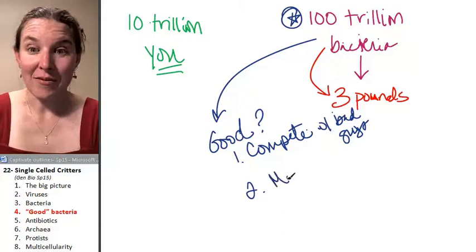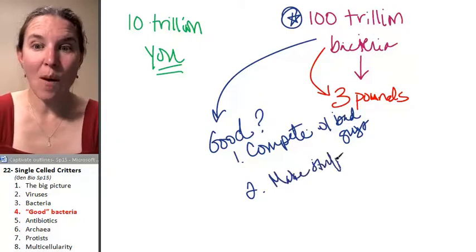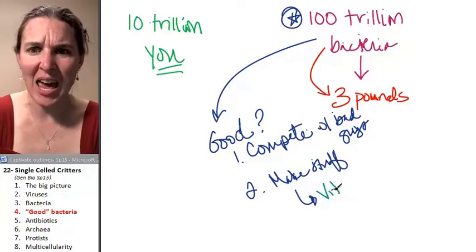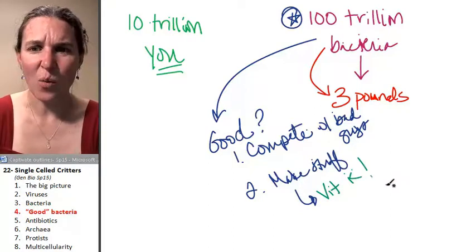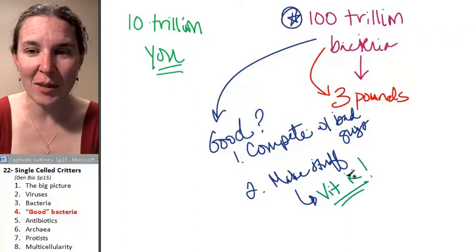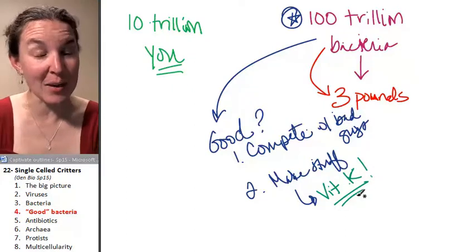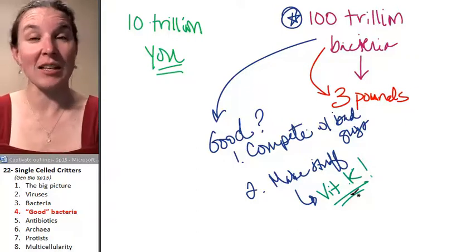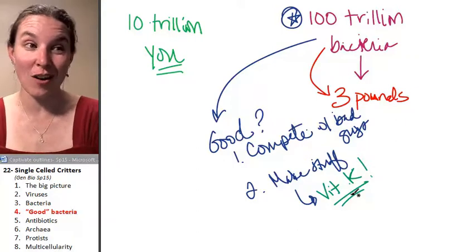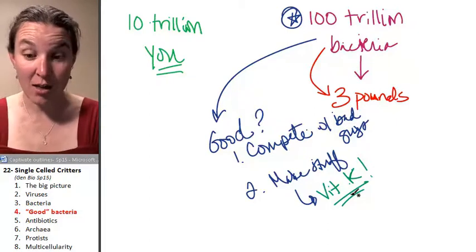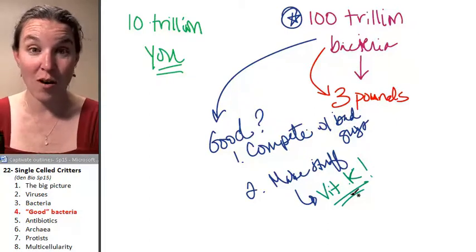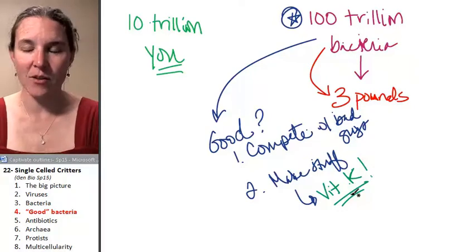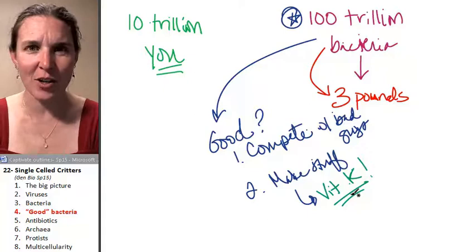Sometimes they make stuff. And one of the things, there's a bacterial species that makes vitamin K. What? And you wouldn't have vitamin K if you didn't have it produced by these bacteria. And the bacteria that make vitamin K live in your large intestine, and then your large intestine cells suck the vitamin K out of your poop before it gets pooped out. You suck out the vitamin K that the bacteria made for you. Thanks, guys.